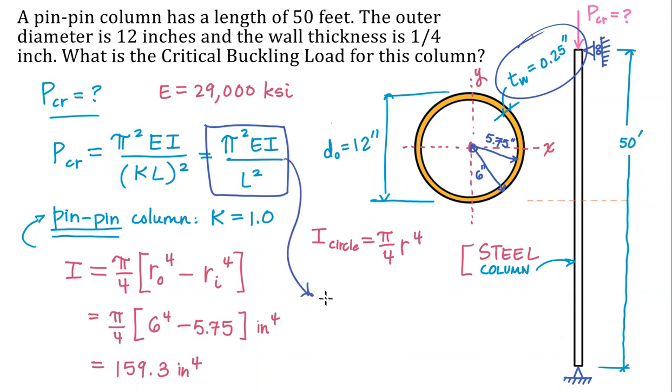P critical equals pi squared. Modulus of elasticity 29,000 kips per square inch. My moment of inertia up here in the numerator, 159.3 inches to the fourth, length to the fourth. And in the denominator, I need my length squared.